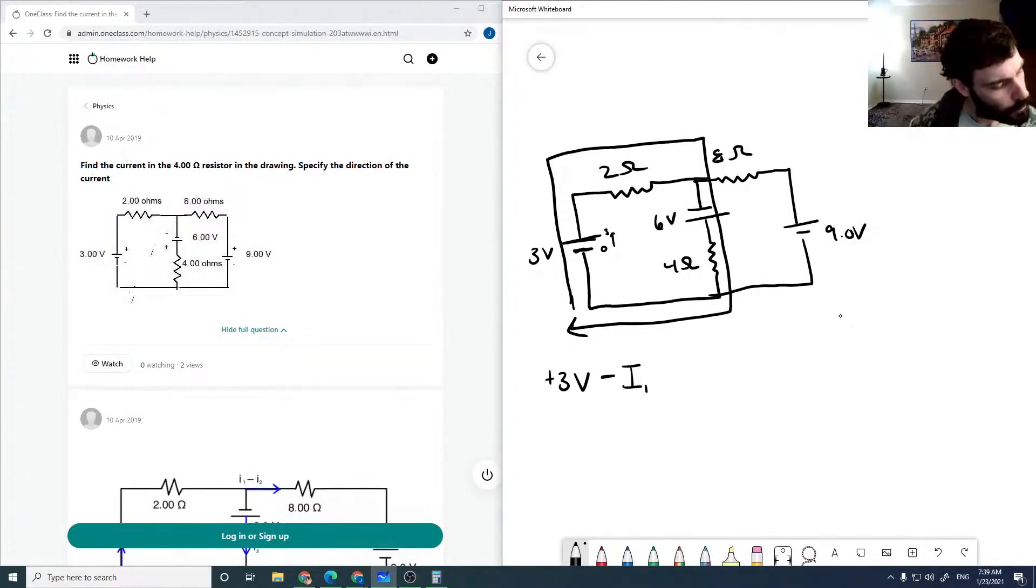And then we're dropping I1 across our 2 ohm resistor. We've got our current 1, which is being dropped across our 2 ohm resistor here. And then we're coming down here and gaining another 6 volts as we go across this guy. And then we're going to drop some I2 across this 4 ohm resistor. And then we're going to be back at the beginning of our loop.